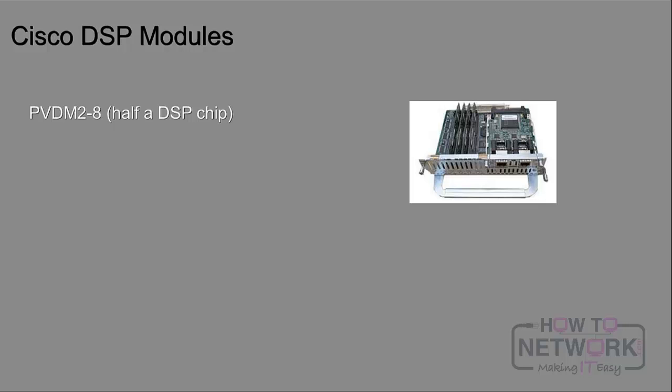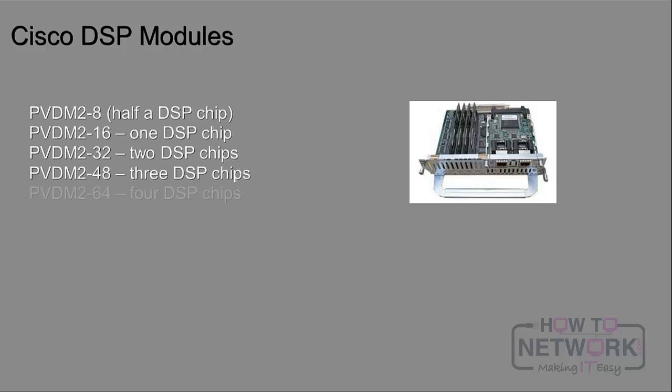There are different sizes of DSP modules that Cisco has. In the PVDM2 series, some of the modules you'll run into are the PVDM2-8, 16, 32, 48, and 64. What's different about these modules is the number of actual digital signal processor chips on the module. The PVDM2-16 is what I'd recommend for a study lab. The PVDM3 is out now and can do a lot more in both quantity and capabilities. Check your hardware for what's supported — what works in a 2811 may not work in a 2911.